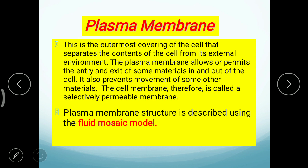कुछ ही चीजों को अंदर-बाहर आने की अनुमति प्रदान करती है cell membrane — यह plasma membrane. इसीलिए इसे selectively permeable membrane कहते हैं।